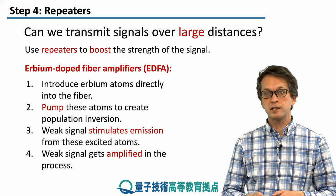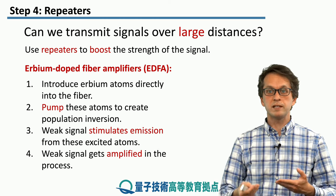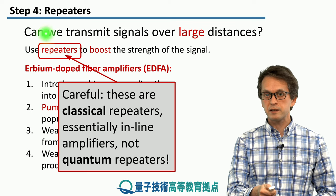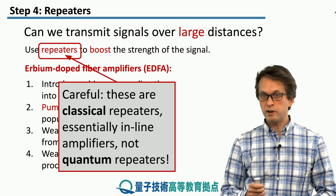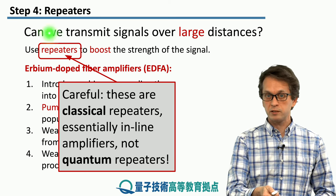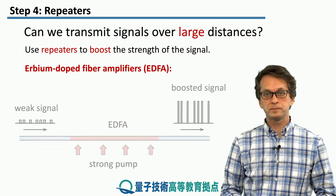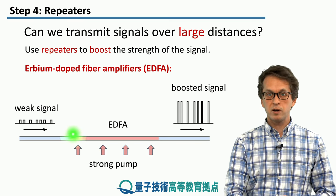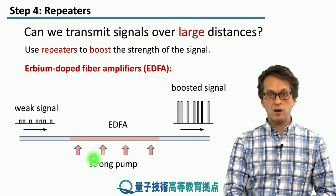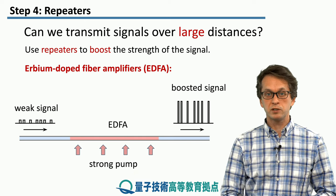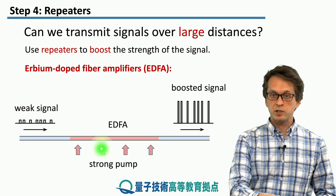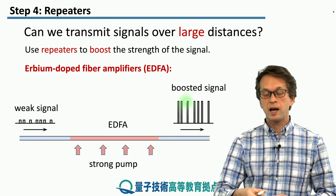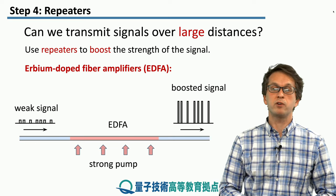In this process, we obtain a signal that becomes amplified and can travel a further distance before it needs amplification again. Just to remind you, we will encounter the term repeater in the next lesson as well, where we will be talking about quantum repeaters — but they work on a very different basis from classical repeaters. Here we are still talking about classical repeaters. This is the image we have in mind: we've got our fiber, and some portion of it where we introduced erbium atoms. We pump them strongly to create population inversion, and as the weak signal comes in, it stimulates emission from the erbium-doped region. In that process, it becomes boosted again, and we allow it to travel further for another 50 kilometers or so before it needs boosting again.